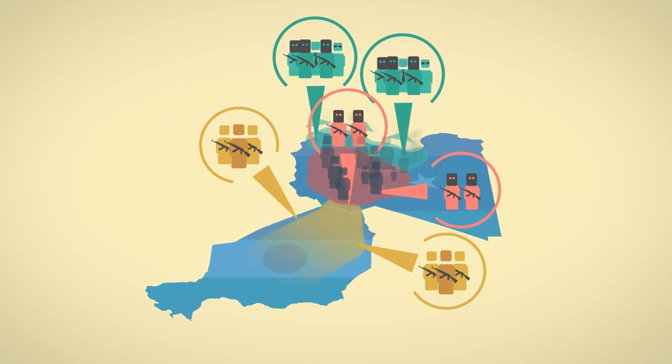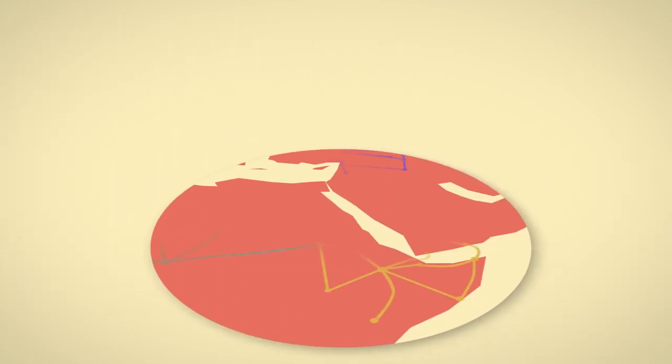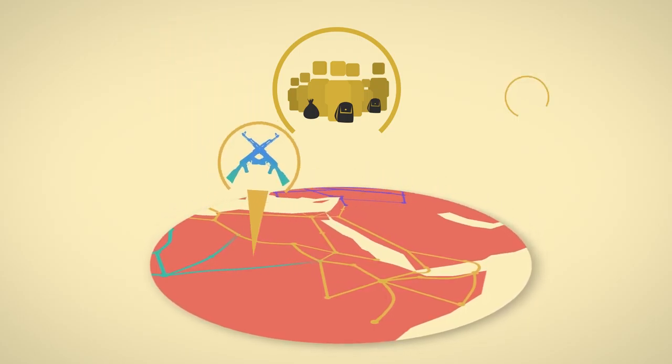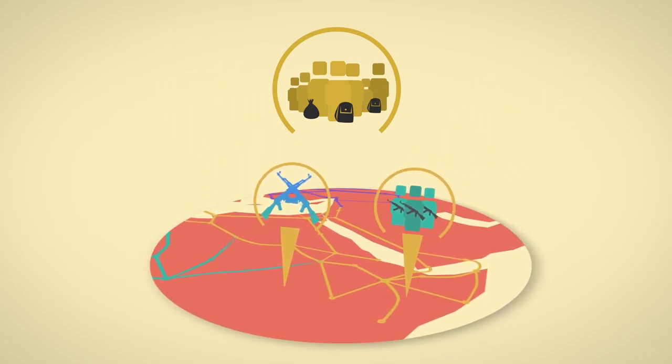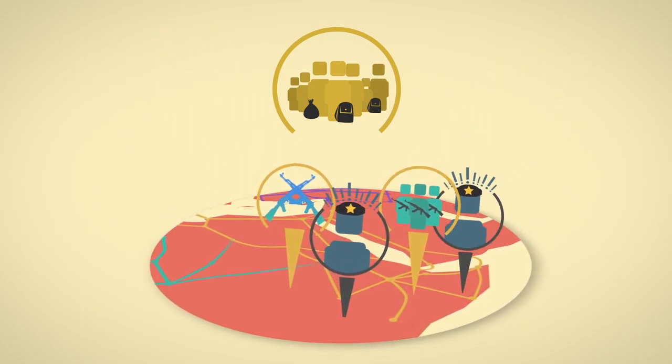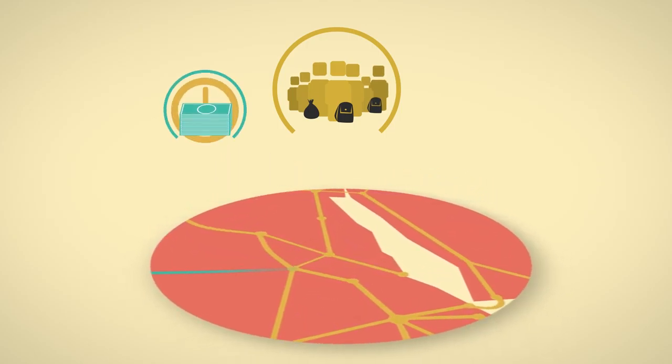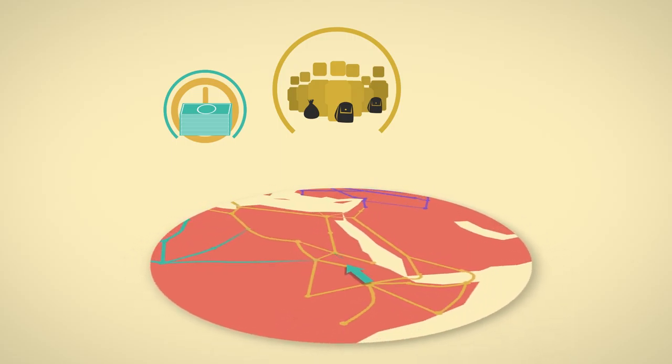In East Africa and the Horn, illicit migration also serves as a resilience mechanism, but for different reasons. Ongoing civil conflict and interstate clashes, as well as a number of authoritarian regimes, mean that migrants spend as much money and effort to leave their own home states as they do seeking passage elsewhere.